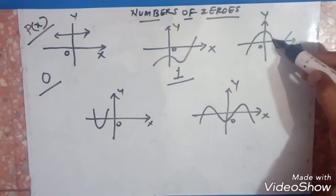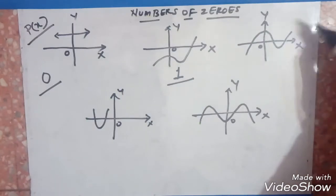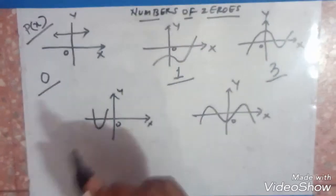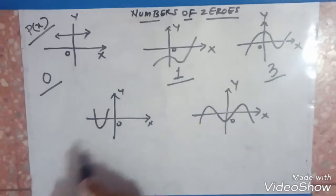And in the third graph, you can check 1 and 2 and 3. There are 3 points. Therefore, there are 3 intersections with the x-axis. The number of zeros are 3.